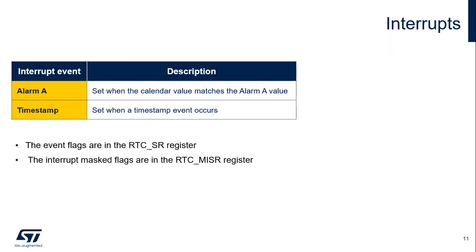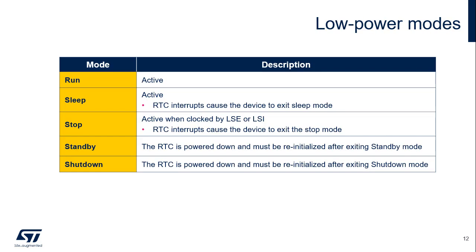Two RTC events can generate an interrupt, and these interrupt events can wake up the microcontroller from sleep and stop modes. The alarm A interrupt is set when the calendar value matches the alarm A value. The timestamp interrupt is set when a timestamp event occurs. The RTC peripheral is active in run, sleep, and stop modes, and RTC interrupts cause the device to exit sleep and stop modes. In stop mode, only the LSE or LSI clocks can be used to clock the RTC. In standby and shutdown modes, the RTC is powered down.